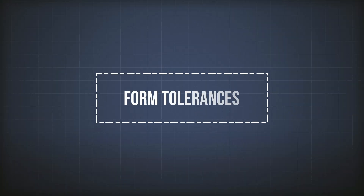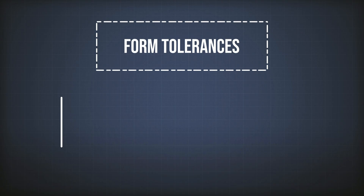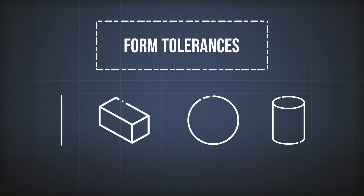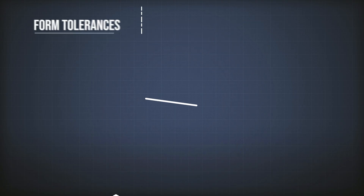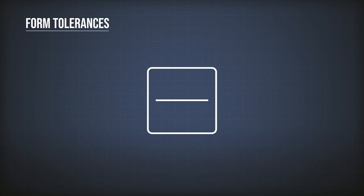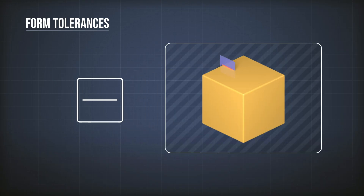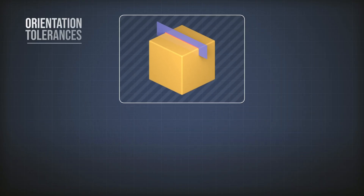Parallelism. Until now, we studied the form tolerances, which are used to control the form of an element independent of any other element. For example, the straightness of a line — we just control the straightness of this line and we don't look at any other element on the drawing. But now we will have a look at the orientation tolerances, starting with parallelism.